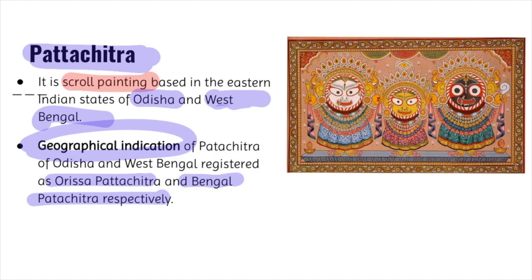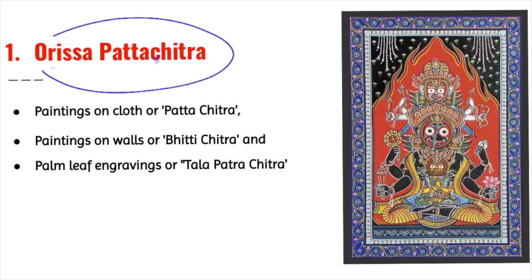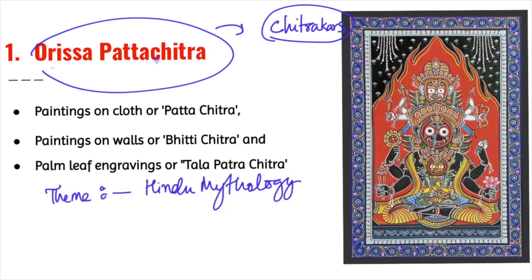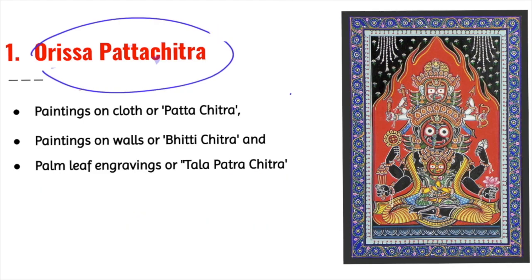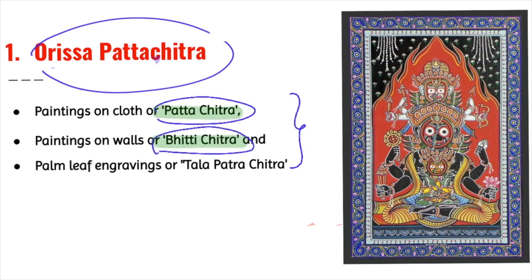In Odisha, the Patachitra painters are known as Chitrakaras. The theme is based on Hindu mythology, especially inspired by Jagannath and the Vaishnava sect. On the basis of medium, these paintings are categorized into three forms: Patachitra — painting on cloth; Bhitti Chitra — painting on the wall; and Talpatra Chitra — palm leaf engraving.